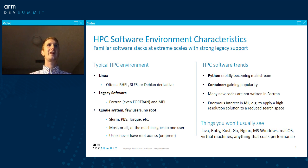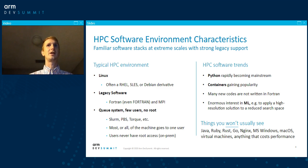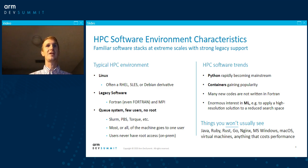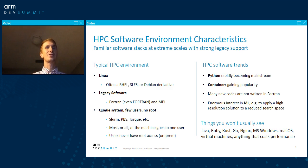Some things you typically see in an HPC environment: your operating system is pretty much always Linux. The one exception might be financial markets where Windows is used, but most people will be using Linux — RHEL, SLES, or Debian. On AWS, you have Amazon Linux, which can also be used for HPC workloads. You also find support for legacy software, things like codes written in Fortran that may be 20 or even 30 years old which can't be rewritten. So you find Fortran compilers and support for very old programming methodologies and paradigms.